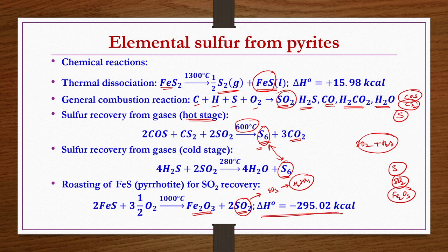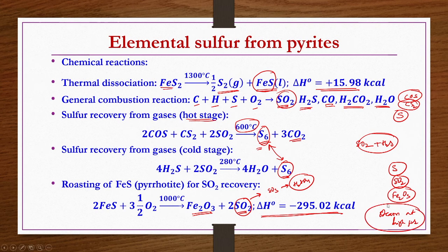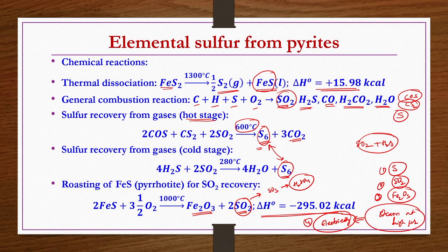Although the thermal dissociation of FeS2 is endothermic, other reactions are highly exothermic. Steam generated at high pressures can be utilized to produce electricity or power. So from this process, four products are obtained: elemental sulphur S, SO2 from which H2SO4 is made, Fe2O3, and electricity.